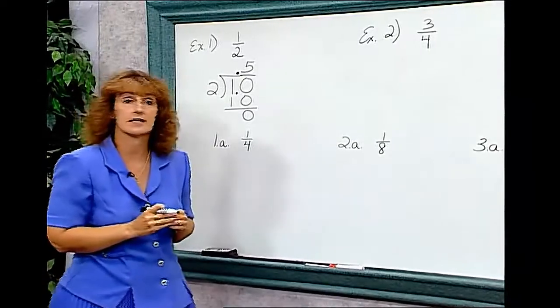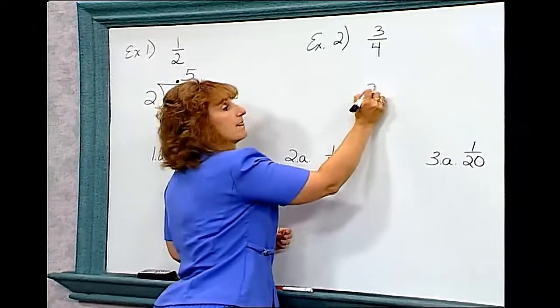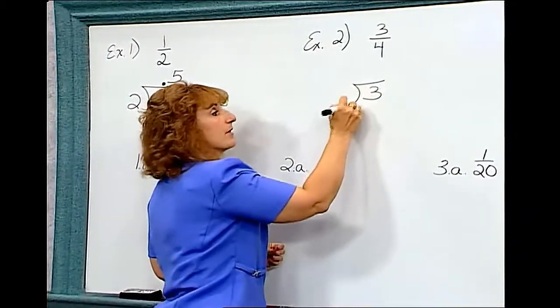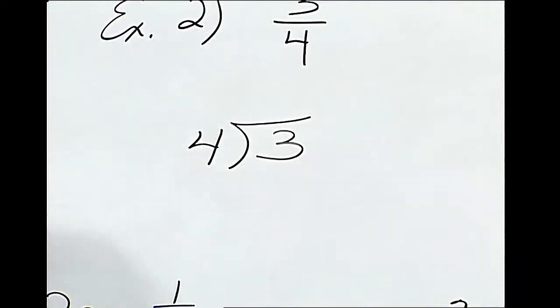Our second example is to change 3/4 into a decimal. Once again, the numerator, which is the top number, always goes inside the division bar. The 4 is on the outside.